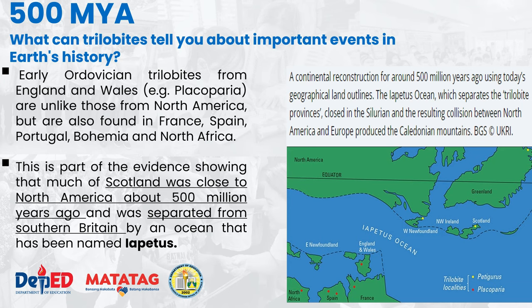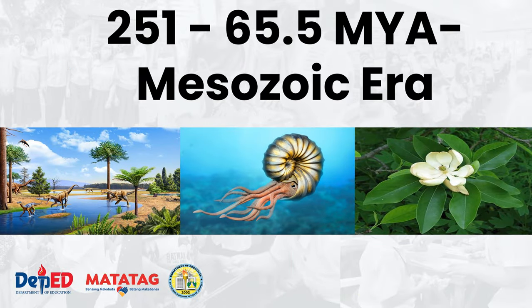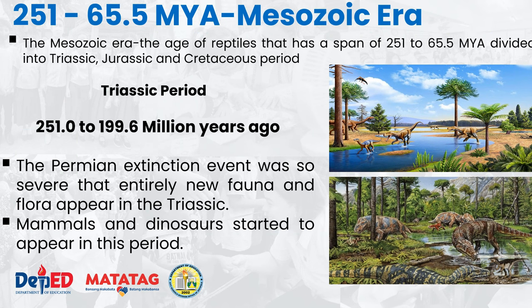251 to 65.5 million years ago — the Mesozoic Era, the age of reptiles, divided into three periods: Triassic, Jurassic, and Cretaceous. During the Triassic period, 251 to 199.6 million years ago, the Permian extinction event was so severe that entirely new fauna and flora appeared. When we say fauna, these are the different types of animals that lived; flora refers to the different plants. Mammals and dinosaurs started to appear during the Triassic period.